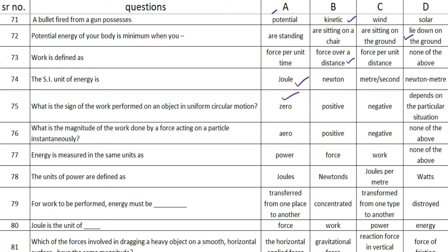The next one is: what is the magnitude of the work done by a force acting on a particle instantaneously? The answer is option A — zero. Energy is measured in the same units as a blank — and the correct answer is option C — work.